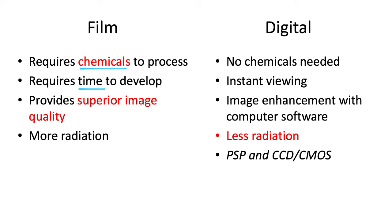However, digital technology allows you to manually adjust things like contrast, brightness, and other settings through image enhancement — that's not possible with film. Film also needs more radiation to attain a diagnostic image; digital does not need as much. Digital has two subcategories we'll talk more about: PSP and CCD or CMOS — that'll come a little bit later in the video.